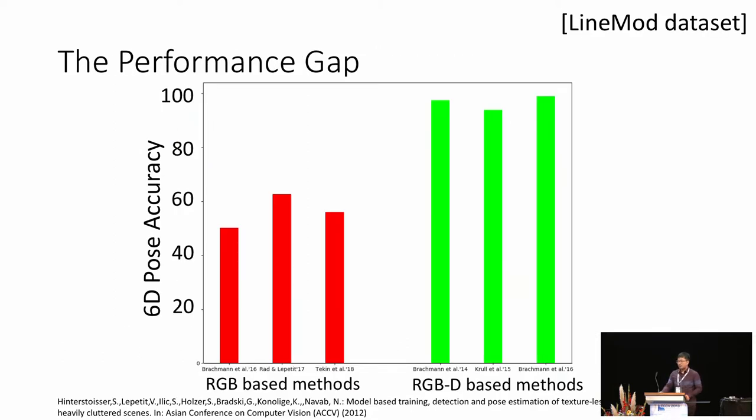However, on the LineMod dataset, the 6D pose accuracy of methods using RGB-only images can be more than 35% lower than the accuracy of RGB-D based methods. This gap also exists on other datasets. We claim that the bottleneck of RGB-based methods was that they did not have a powerful refinement which is comparable to ICP.